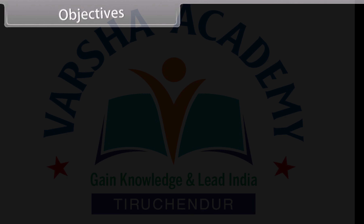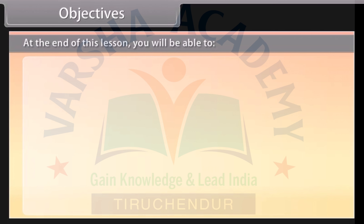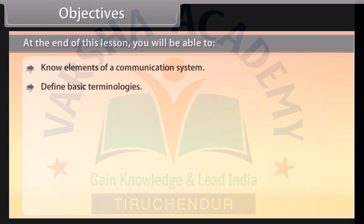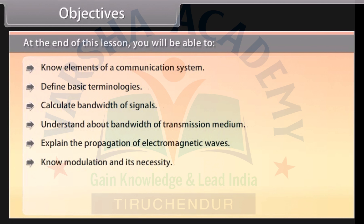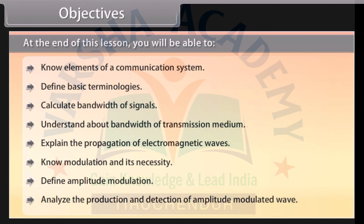Objectives: At the end of this lesson, you will be able to know elements of communication system, define basic terminologies, calculate bandwidths of signals, understand about bandwidth of transmission medium, explain the propagation of electromagnetic waves, know modulation and its necessity, define amplitude modulation, and analyze the production and detection of amplitude modulated wave.